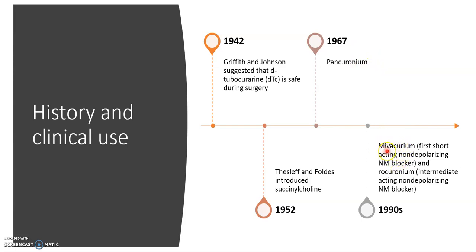In 1990, mivacurium was introduced — the first short-acting non-depolarizing neuromuscular blocker. Remember, the only depolarizing neuromuscular blocker is succinylcholine. Also in the 1990s, rocuronium was introduced as an intermediate-acting non-depolarizing neuromuscular blocker. This illustrates that non-depolarizing agents are mainly divided based on duration of action.